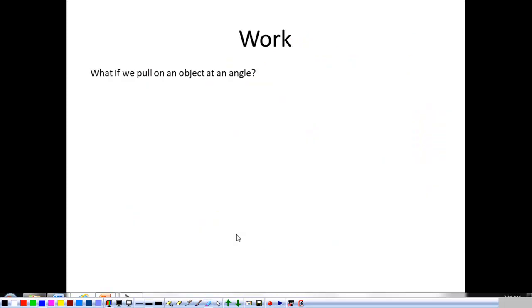Now, we have one more thing to talk about. What if we pull on our object at an angle? If we pull on our object at an angle, but the object still moves forward this way, we have two pieces of our force to deal with. We have the part of our force that's in the horizontal direction, and we have the part of our force that's in the vertical direction.